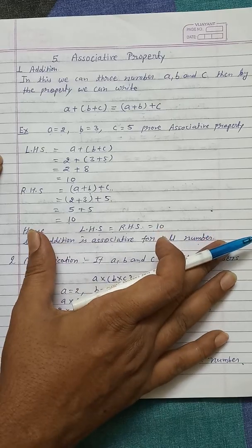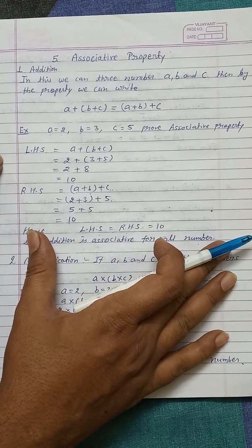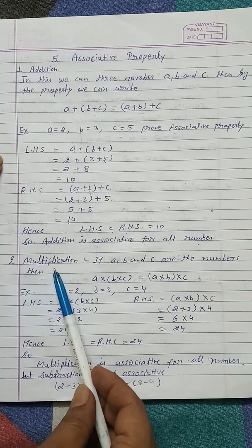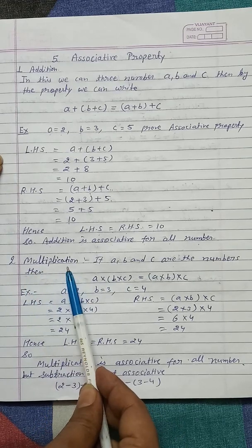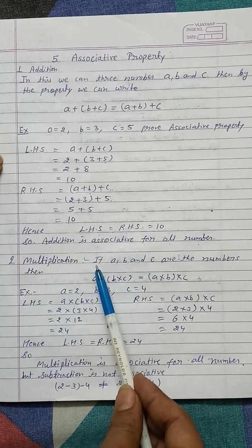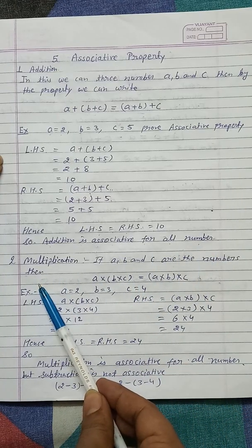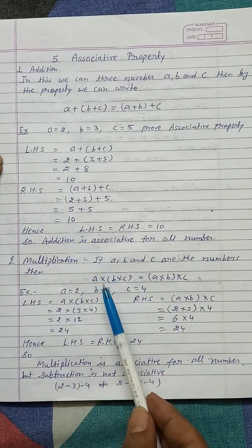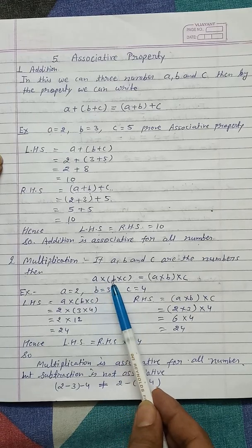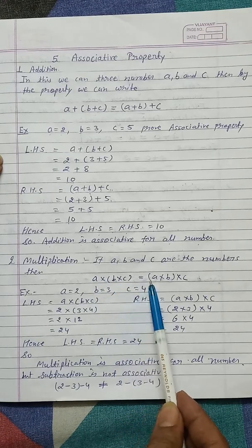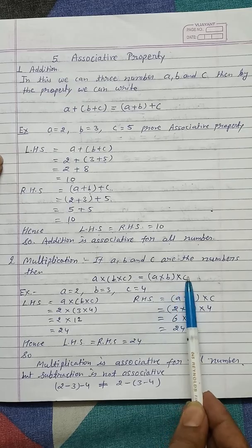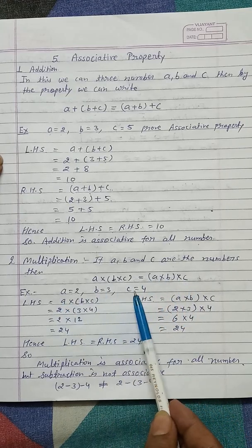So it is known as the associative property under addition. Next we take the second operation: multiplication. If A, B, C are the numbers then by the property A into (B into C) equals (A into B) into C. Now take an example.